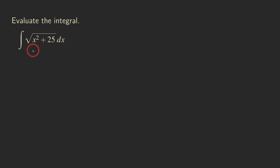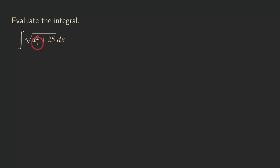This integral has a square root of x squared plus 25, and this actually requires you to use trig sub. As you can see, we cannot integrate that square root directly unless the inside is a linear function, but we have a quadratic expression in there, and there is nothing on the outside that will allow us to use a simple u-sub. So this is a trig sub problem, because it's in the form of x squared plus a constant. So we can try to use trig sub.